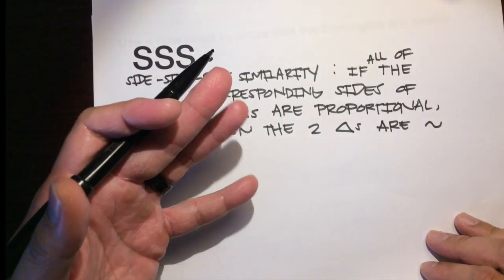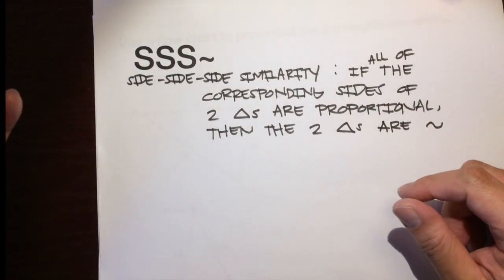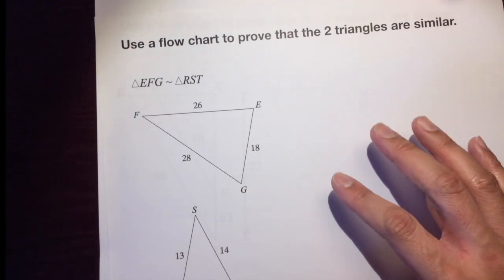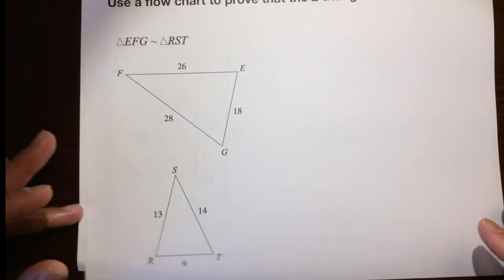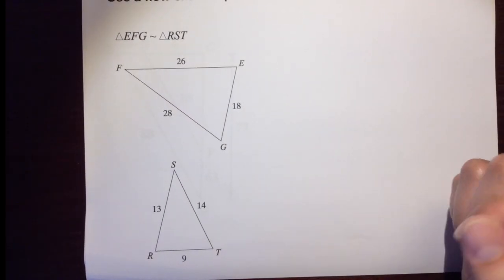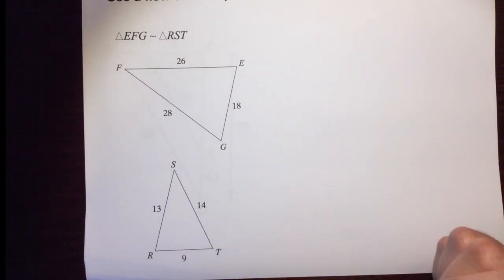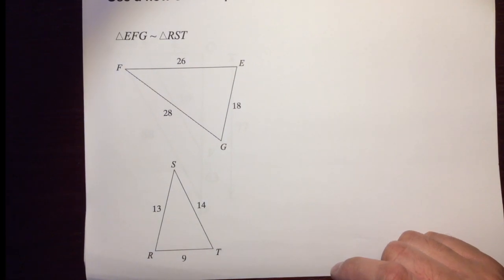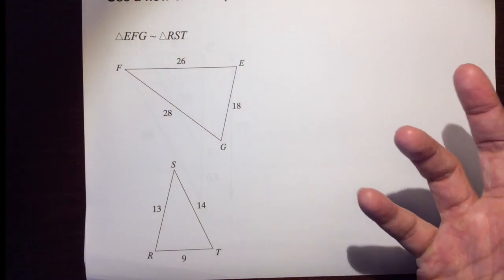In order to prove that two triangles are similar, we have to check if all of the corresponding sides are proportional. One way to present this to a court of law, or to your math teacher, is to use a flowchart. We're going to prove if these two triangles here really are similar. We can't just say they look similar — they're both scalene — that's not enough. We can't go based off of looks; we have to present the evidence.